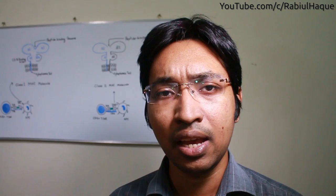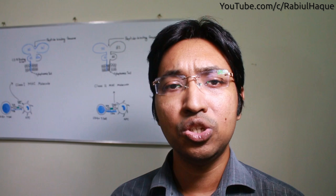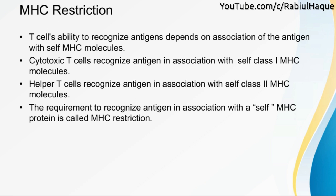Now let's talk about MHC restriction, an important topic examiners often ask about. T cells' ability to recognize antigens depends on the association of antigens with cell MHC molecules. Cytotoxic T cells can recognize antigens only in association with class 1 MHC molecules, while helper T cells can recognize antigen in association with class 2 MHC molecules. This requirement to recognize antigen in association with cell MHC protein is called MHC restriction.